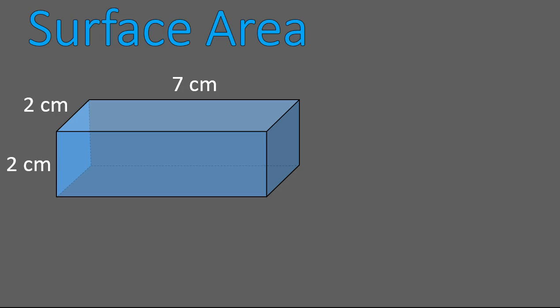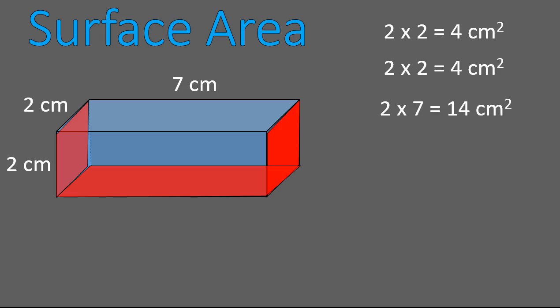Alright, so I'm going to do them the same order I did them before. I'm going to calculate this side, this face. 2 times 2 is 4. This face, 2 times 2 is 4. I'm going to calculate the surface area of the bottom. 2 times 7 is 14. And the top, 2 times 7, again, 14.